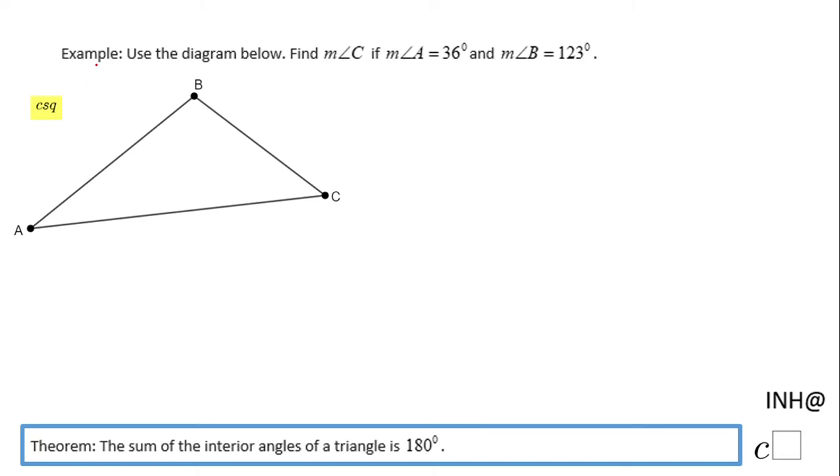Welcome or welcome back to I Need Help at C Square. In this example, we have a triangle and we need to find the measure of angle C if the measure of angle A is 36° and the measure of angle B is 123°.